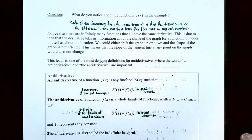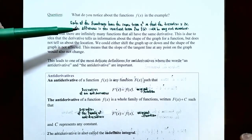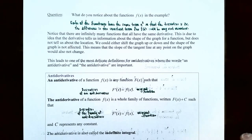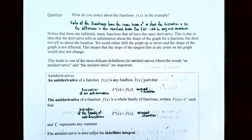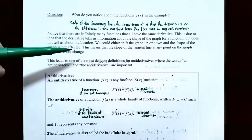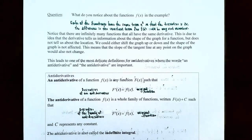It doesn't matter what the constant was because the derivative of a constant is 0. So each of the functions will have a constant term as well in the antiderivative, and the constant just represents any real number. Notice from this previous example there are infinitely many functions that all have the same derivative. This is due to the idea that the derivative tells us information about the shape of the graph for a function, but does not actually tell us what the function is. We can shift the graph up or down and the shape of the graph is not changed.